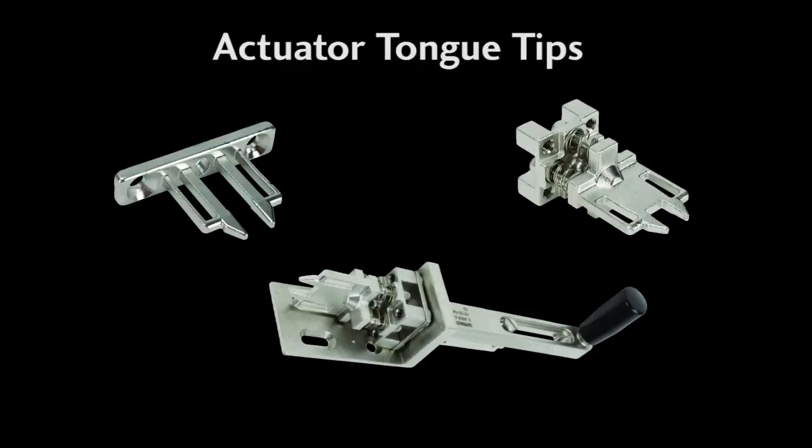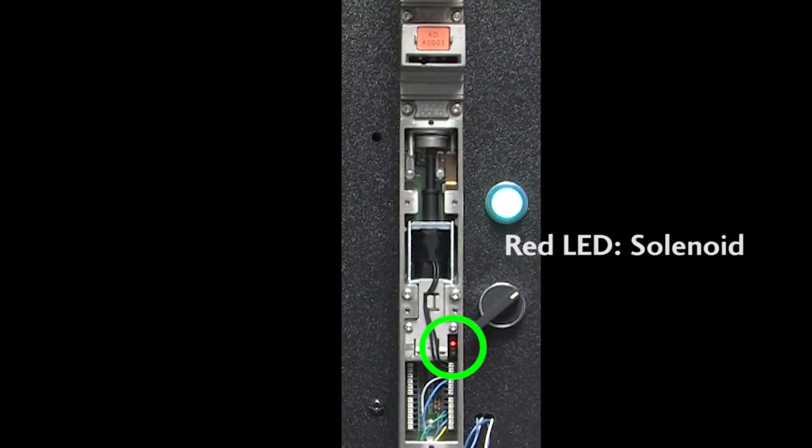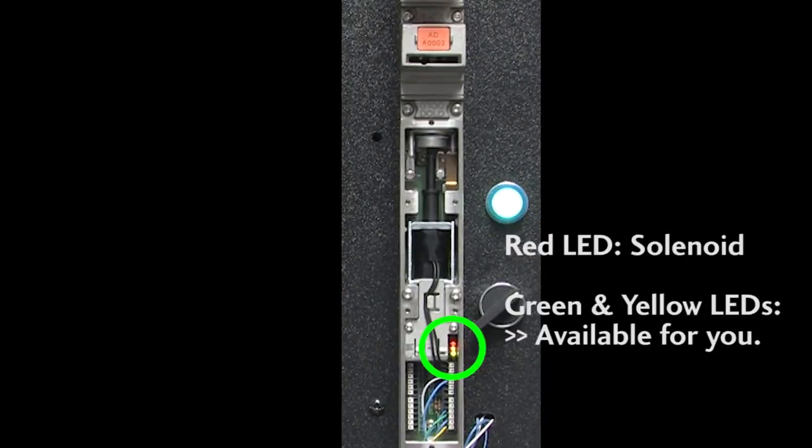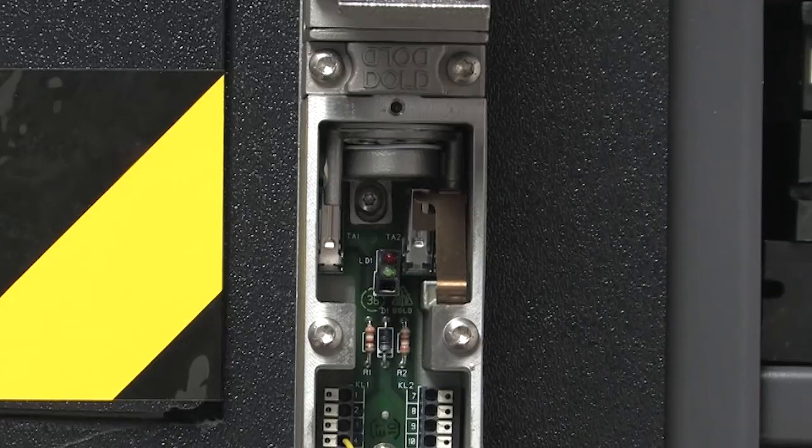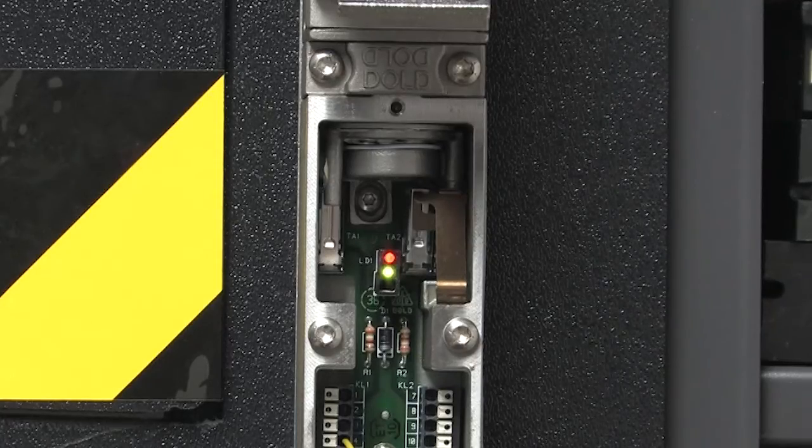There is also a spring loaded tongue that is more forgiving than the regular tongue. In addition to the red solenoid LED, there is also a yellow and green LED on the solenoid base that you can wire however you want. The non solenoid contact base has a red and green LED for you to use however you want.